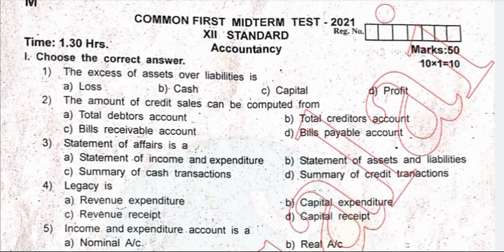Hi friends, welcome back to our channel. Today we are reviewing the 2021 12th standard accountancy question paper. Topic one: choose the correct answer. The excess of assets over liabilities is...